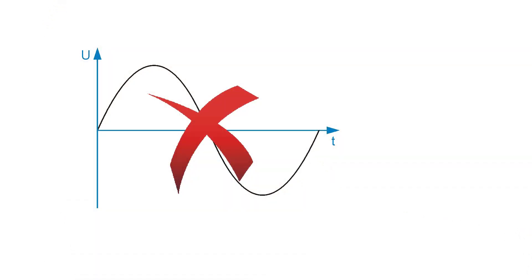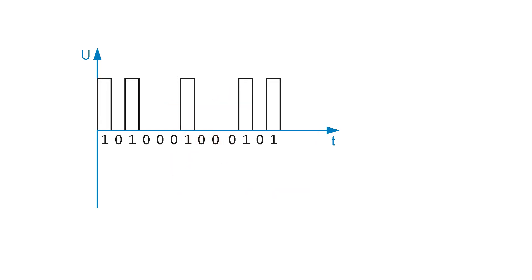Digital technology does not know continuous curves. It only knows two modes. A digital signal is therefore formed by a sequence of impulses.